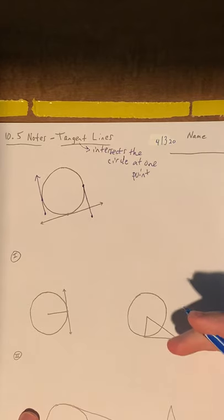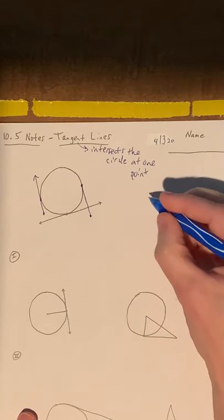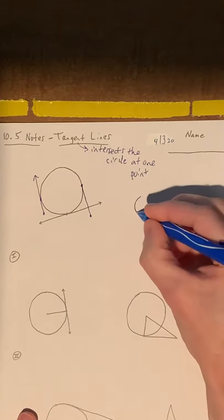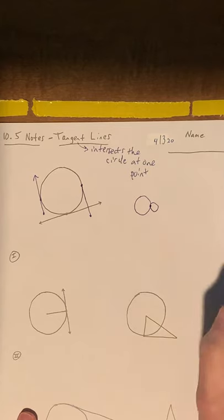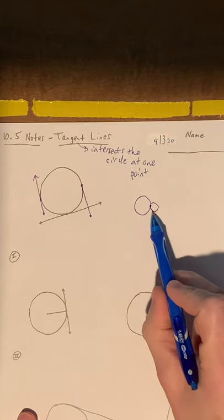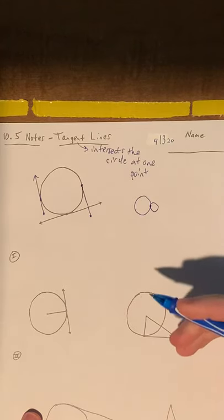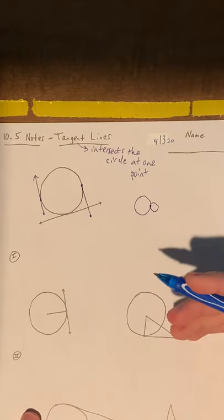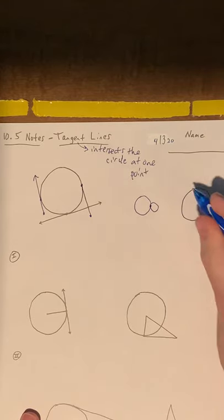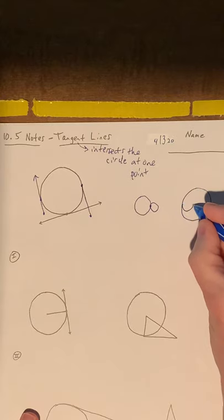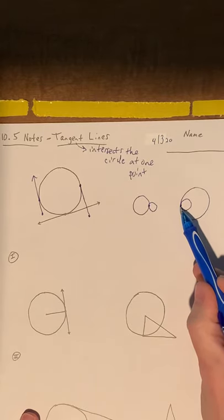Now you could also have circles that are tangent to each other, like two circles that are considered tangent. Just a real simple sketch, something like this, where one circle next to another circle. If they hit at one point, it could be considered tangent. You could also have it where one of the circles is inside or on the interior of the other circle. Something like this, where they would only intersect or touch at this one point.